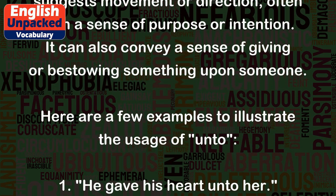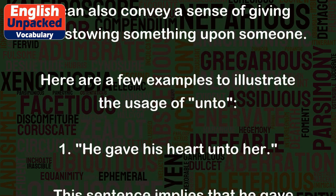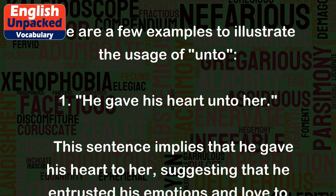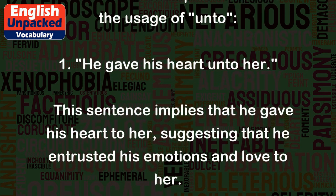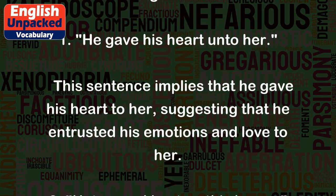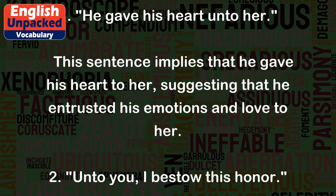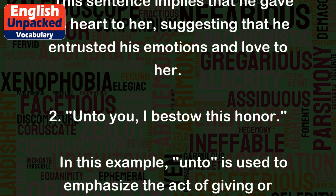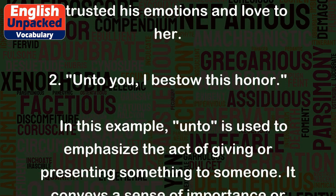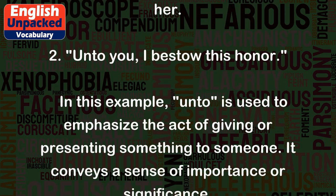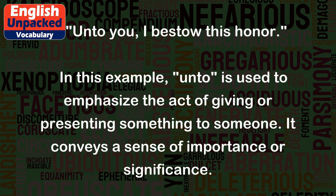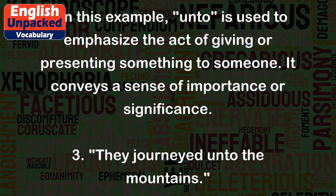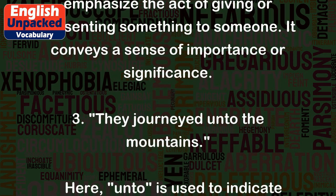It can also convey a sense of giving or bestowing something upon someone. Here are a few examples to illustrate the usage of unto. One: 'He gave his heart unto her.' This sentence implies that he gave his heart to her, suggesting that he entrusted his emotions and love to her. Two: 'Unto you, I bestow this honor.' In this example, unto is used to emphasize the act of giving or presenting something to someone. It conveys a sense of importance or significance.